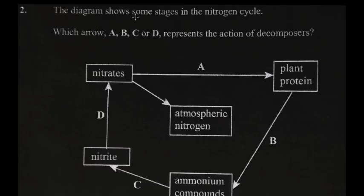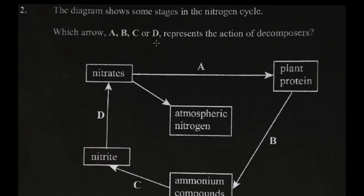The next question says the diagram shows some stages in the nitrogen cycle — not all stages. Which arrow, A, B, C, or D represents the decomposers? Decomposers are saprophytic — they are saprophytes. They feed on dead plants and dead animals. The ecosystem is like an interconnection, and within this interconnection there are certain cycles because you have to recycle nutrients.